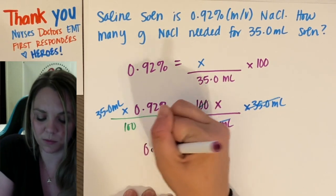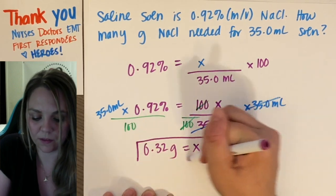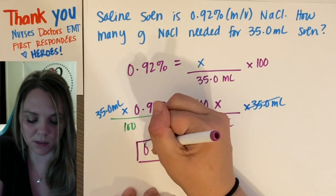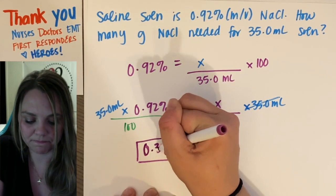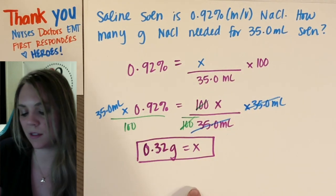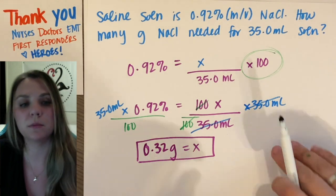And then you would get x equals a number that I've hopefully solved, yes, 0.32 grams of sodium chloride, of NaCl, which is salt, right? Just table salt. So please, please make sure you don't forget this piece right here. That's pretty much it.